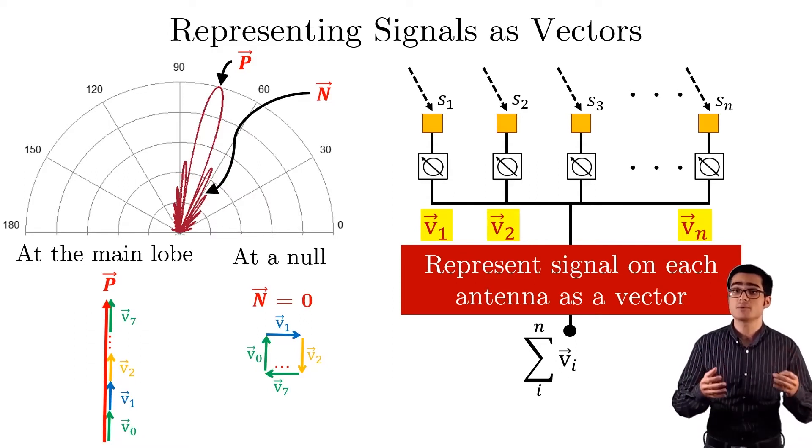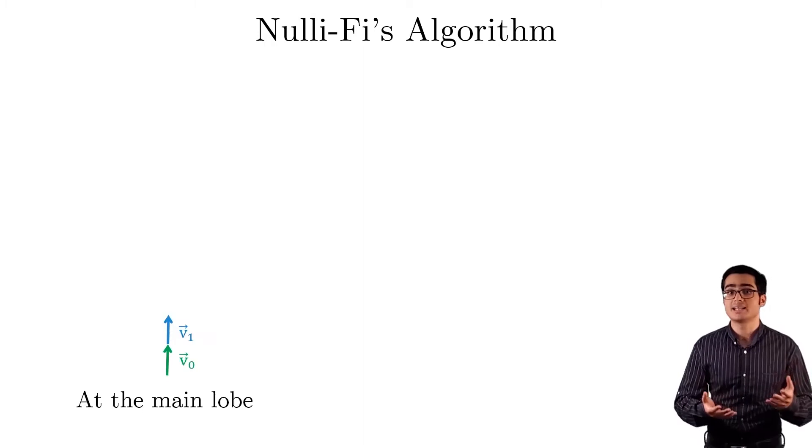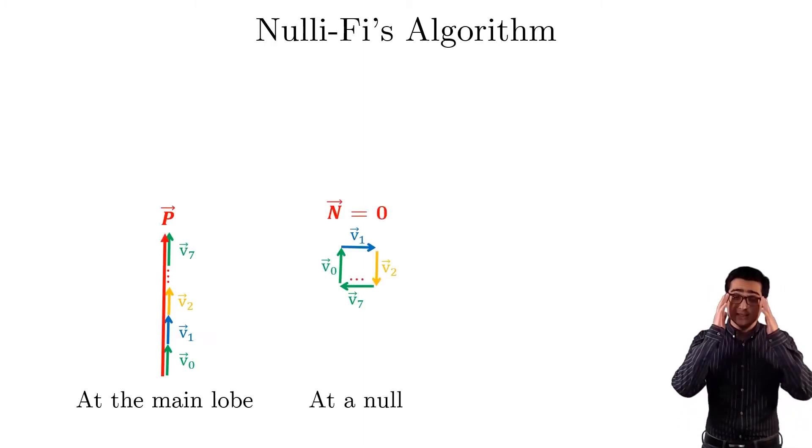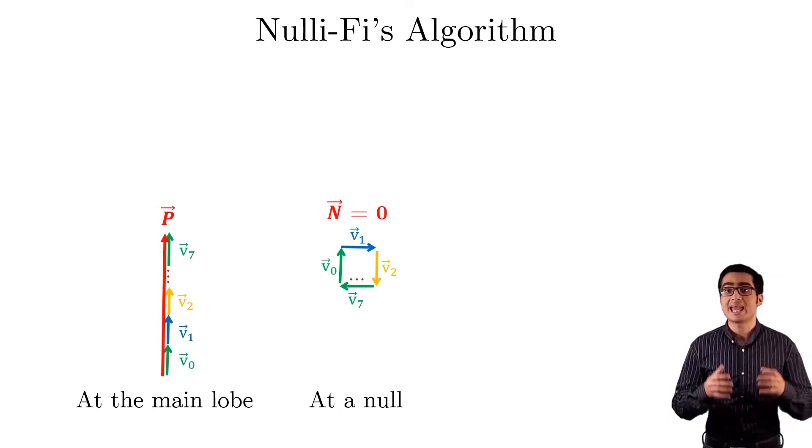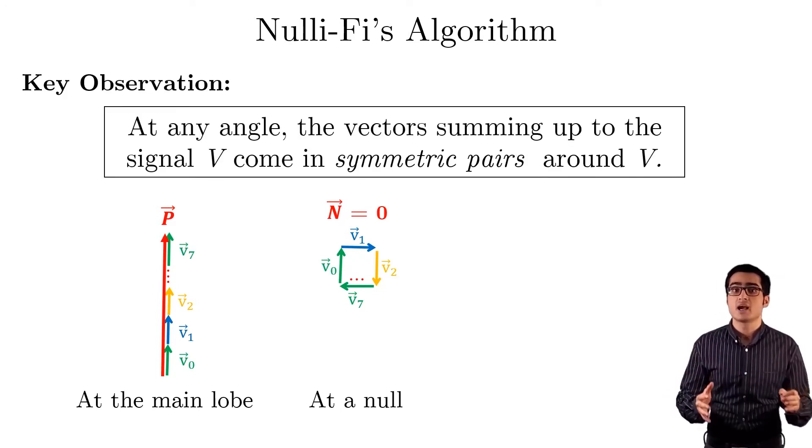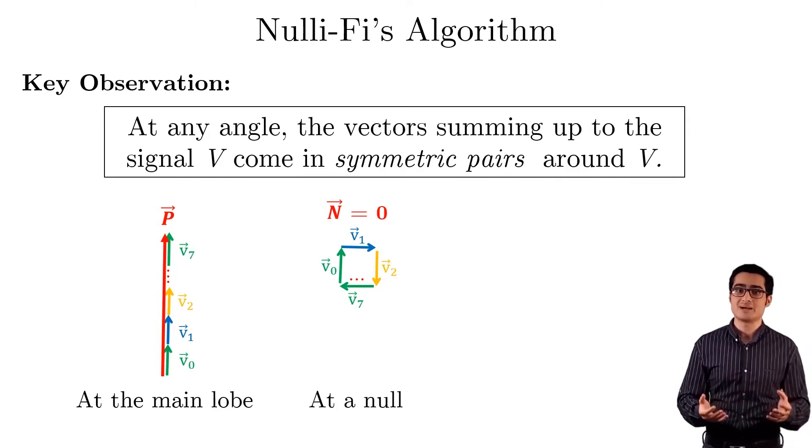Nullify uses a key observation for its algorithm. As we just saw, the vectors are aligned at the main lobe and cancel out at a null. The key observation is that for any angle, the vectors summing up to the signal v come in symmetric pairs around v.